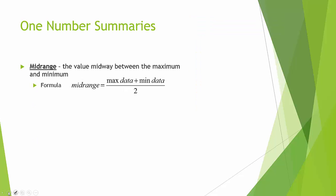Our final measure of center is the midrange. We find the midrange by taking the maximum piece of data and adding it to the minimum piece of data, and then dividing by 2. This gives us the value that is midway between the maximum and minimum. The midrange does not necessarily have the same value as the median — for the median we are crossing out actual numbers to find the middle number, whereas for the midrange we are finding the midpoint of the range.